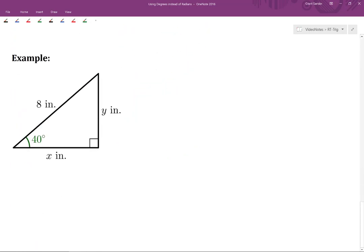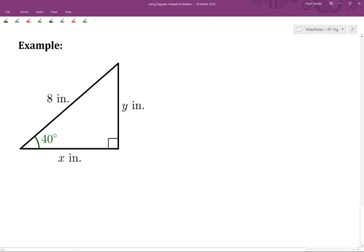Let's look at another example. Let's suppose we have this right triangle right here. We have an angle of interest of 40 degrees. The hypotenuse of this right triangle is 8 inches long. Suppose we want to know the slope of this right triangle's hypotenuse.